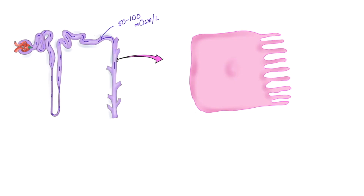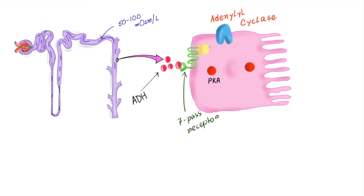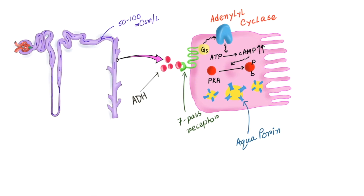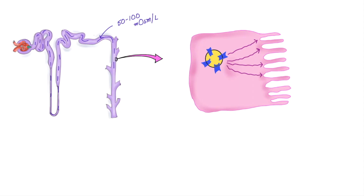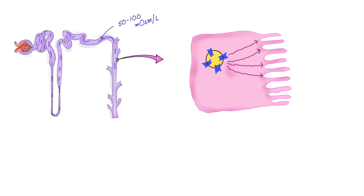Now let's see how ADH alters the cellular environment. Cells of this part of the nephron have a receptor for ADH — they are serpentine receptors or 7-pass receptors. ADH binds with this serpentine receptor which stimulates intracellular G protein. The intracellular G protein stimulates adenyl cyclase, which converts ATP into cyclic AMP. When intracellular cyclic AMP goes up, it phosphorylates protein kinase A. There are some intracellular vesicles having special protein channels which look like pores and water can pass through them — that's why those protein channels are called aquaporins. Protein kinase A phosphorylates those proteins and they get fused with the luminal membrane of the nephron.